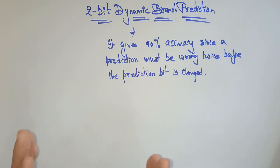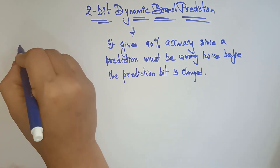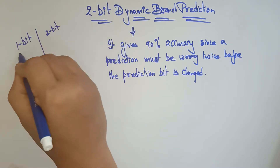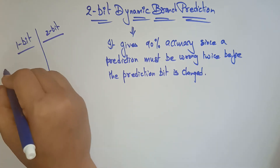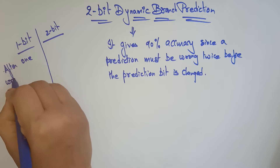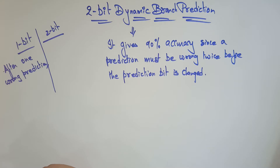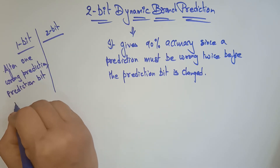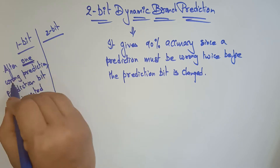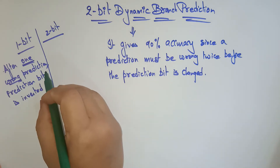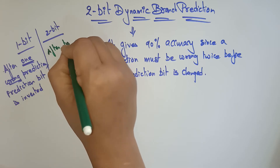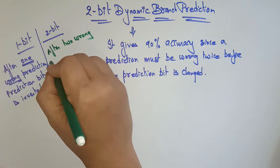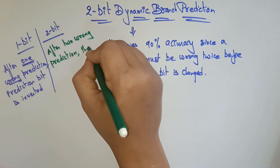Prediction is nothing but a guess. There are static and dynamic types. In 1-bit dynamic branch prediction, after one wrong prediction the prediction bit is going to be inverted — only after one wrong prediction. Whereas in 2-bit dynamic branch prediction, after two wrong predictions, then only the prediction bit is going to be inverted.